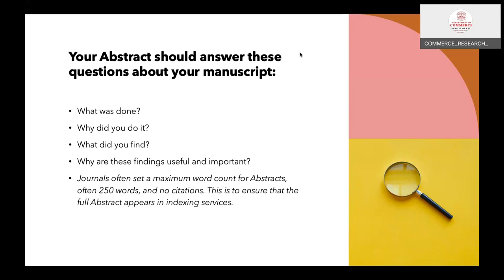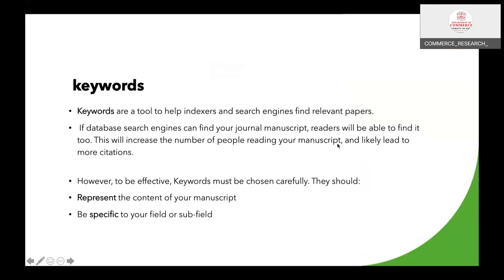The next important point is keywords. Keywords are the tool to help indexes and search engines to find relevant papers. If the database search engines can find your manuscript, readers will be able to find it too. This will increase the number of people reading your manuscript and likely lead to more citations. With your keywords, when somebody searches your title in Google Scholar or some other search engine, your paper will pop up — with the help of keywords.